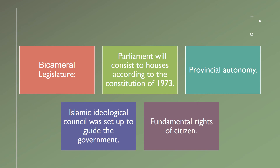According to the 1973 Constitution, the upper house is called the Senate, which consists of 104 members, and the lower house is called the National Assembly, which comprises 342 members. Regarding provincial autonomy, the provincial governments were granted autonomy and equal representation in the Senate.